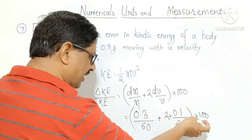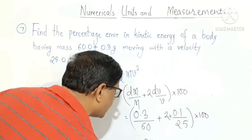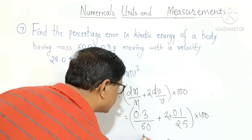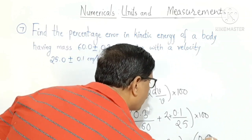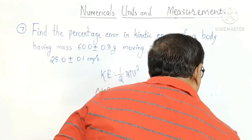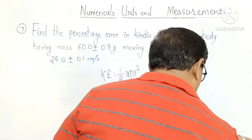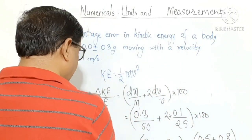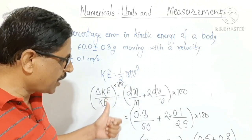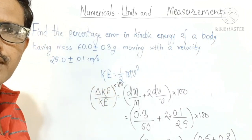Taking 100 inside: (0.3 × 100)/60 + (0.2 × 100)/25, which is 30/60 plus 20/25, giving 0.5 plus 0.8, equal to 1.3. Therefore the percentage error in kinetic energy comes out to be equal to 1.3 percent.